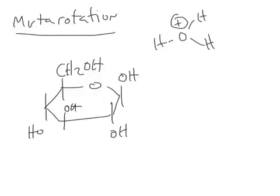Mutarotation is a property of reducing sugars that leads to a transition between different anomers. In this case, we have a beta-D-glucopyranose.